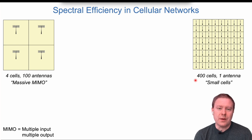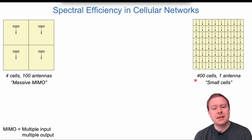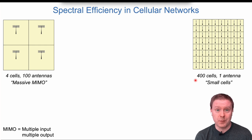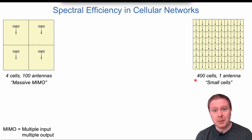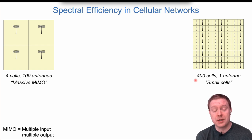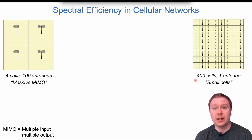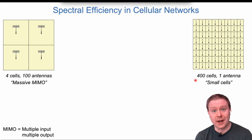When sending data, spectral efficiency is the important metric, since bandwidth times spectral efficiency gives you your data speed. For a phone call, you only need a small amount of spectral efficiency and beyond a certain number you don't get better quality. But for data transmission, the story is different.